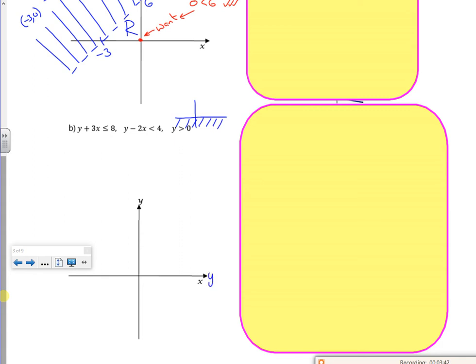So this one's got three of them. So y is greater than 0. So that's OK, because what that would look like, that's just the x axis. So I want above the x axis. So that part would be like that. So my y is greater than 0.